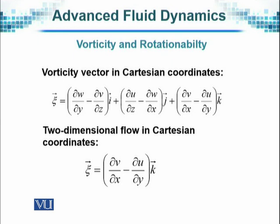The component of vorticity in the y direction is the partial derivative of u with respect to z minus the partial derivative of w with respect to x. And finally, in the z direction, the vorticity vector component is calculated by the partial derivative of v with respect to x minus the partial derivative of u with respect to y.